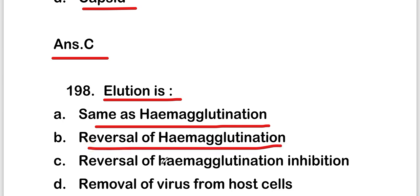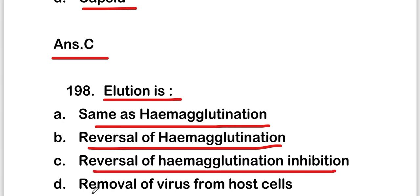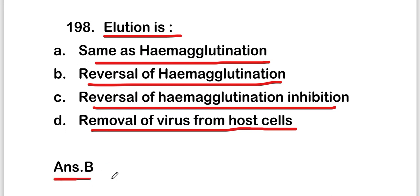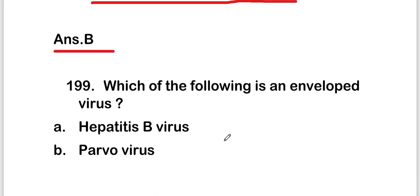The next question: elution is the same as — hemagglutination, reversal of hemagglutination, reversal of hemagglutination inhibition, or removal of virus from host cell. The right answer is option B — reversal of hemagglutination. Elution is the reversal of hemagglutination.